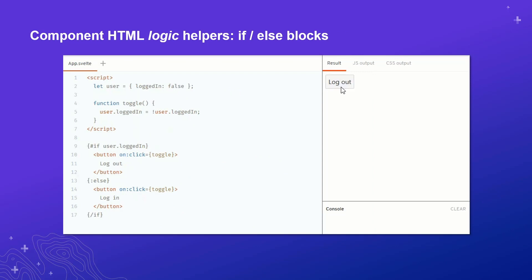Sometimes we want to do a little bit more with our HTML, and Svelte has a few mechanisms to help with logic. The if-else block is exactly what it sounds like — it will conditionally render HTML if a certain condition is met or not met.